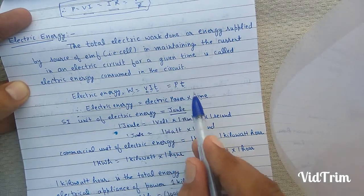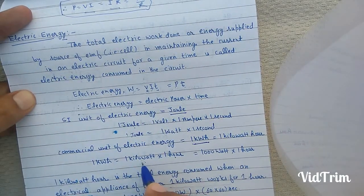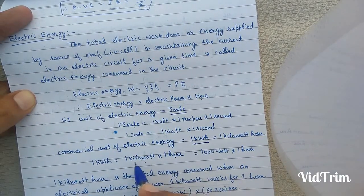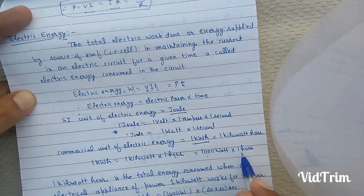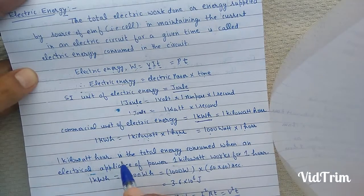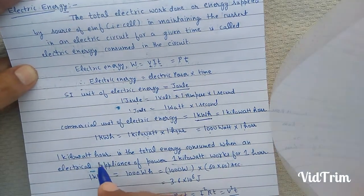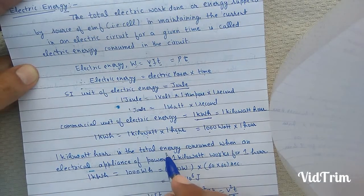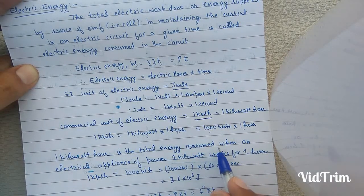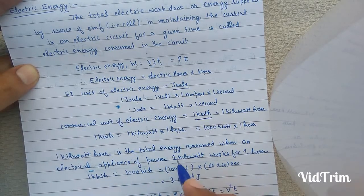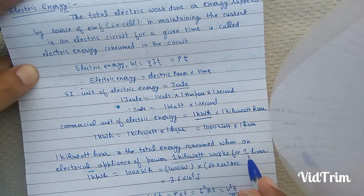The SI unit of power is watt and time is second. Now, 1 kilowatt hour is 1 kilowatt into 1 hour, where 1 kilowatt equals 1000 watt. One kilowatt hour is the total energy consumed when an electrical appliance of power 1 kilowatt works for 1 hour.